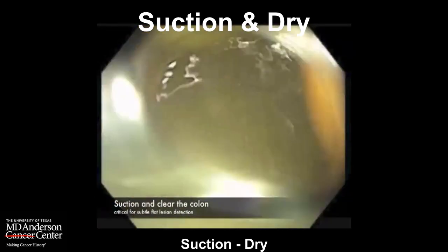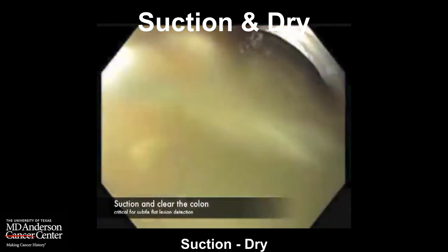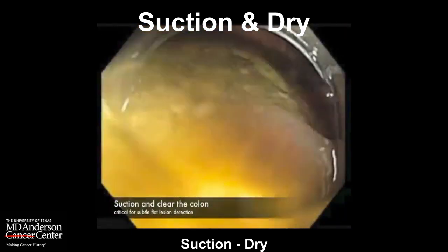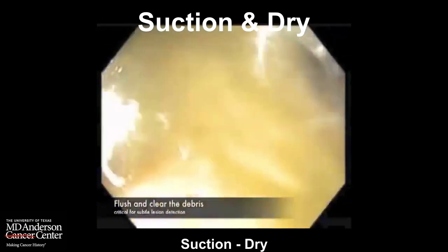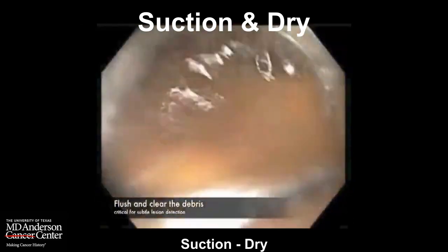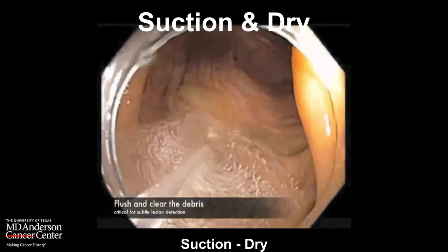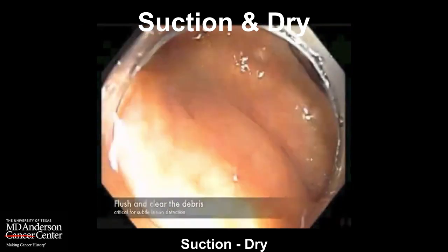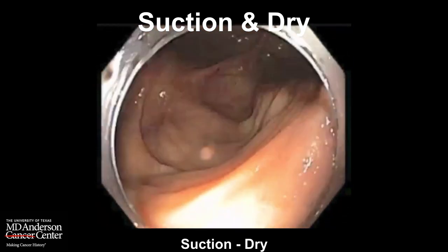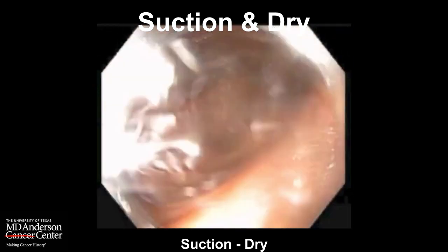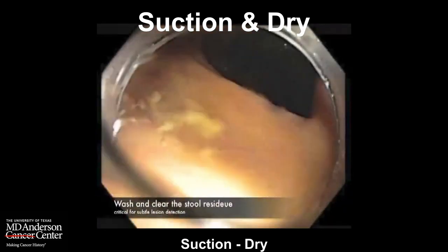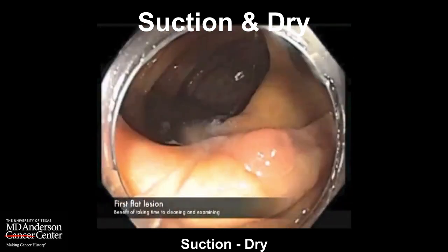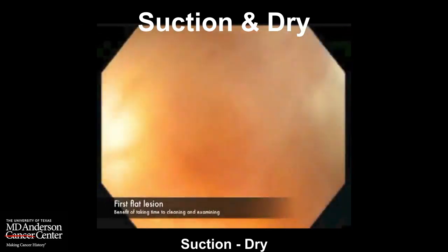Take time to suction and dry up the colon, and never assume that there is nothing underneath a pool of fluid. As we suction, there is still some debris. We use a water jet to clear the debris, and then after suctioning, drying, and examining the cecum, we realize there are a few large, flat lesions. Here is one — as you wash, it comes into the front of your eyes: a large, flat, ulcerated adenoma.